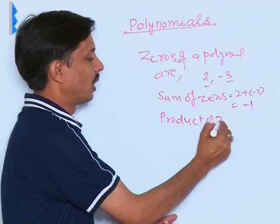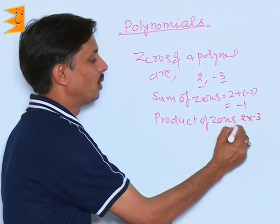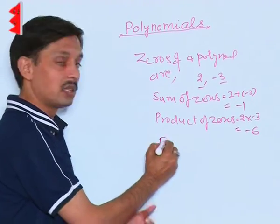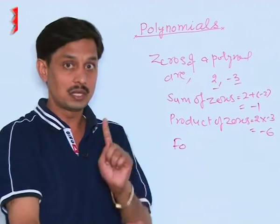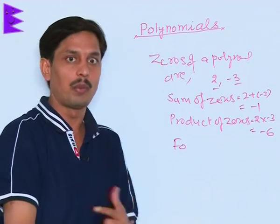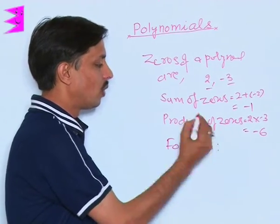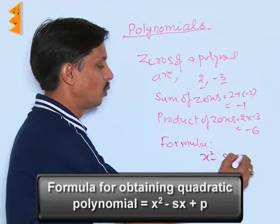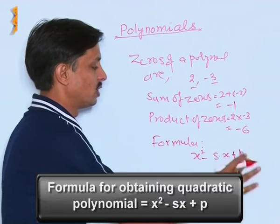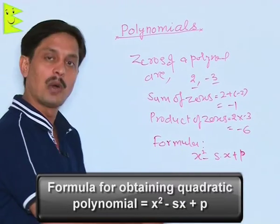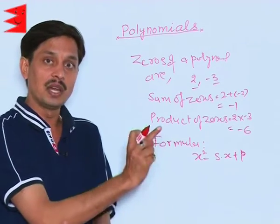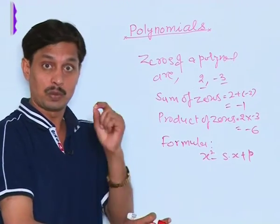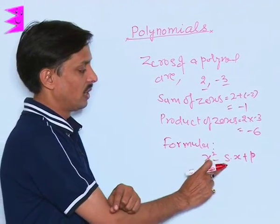Then, we need to calculate the product of zeros that comes out to be 2 into minus 3, that is minus 6. Formula for calculating the quadratic polynomial if its sum and product have been calculated, given or obtained. That is, formula for obtaining the quadratic polynomial is x square minus s into x plus p, it is not 0 because it is not an equation, it is a polynomial. So, formula for obtaining the quadratic polynomial if s and p indicate for the sum and product of two zeros is given by x square minus sx plus p.